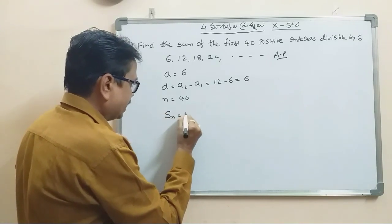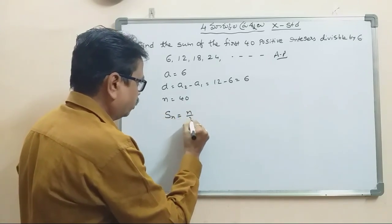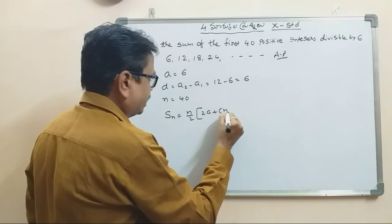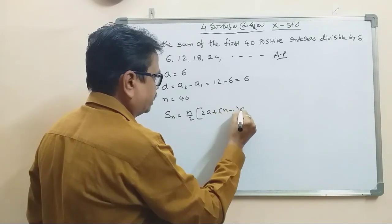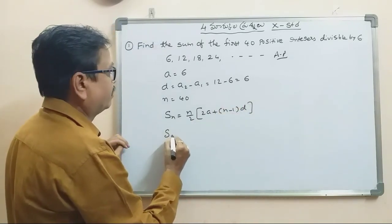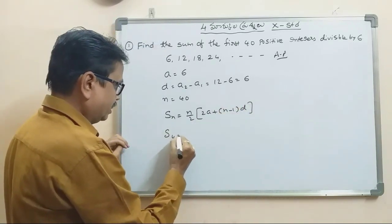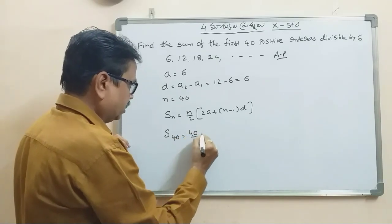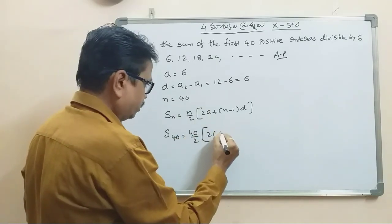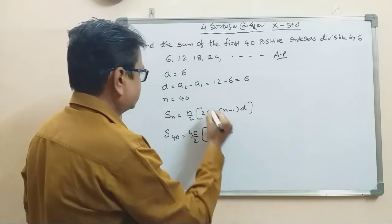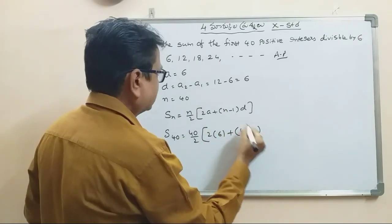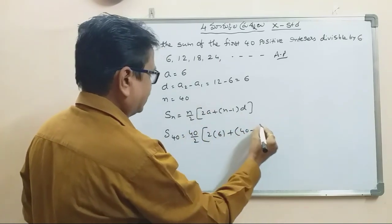S_n is equal to n by 2 into 2a plus n minus 1 into d. S_n is 40, that is equal to 40 by 2, 2 into a value 6, plus n minus 1 — n is 40 minus 1 — common difference is 6.